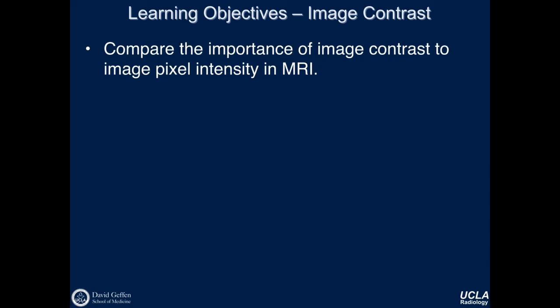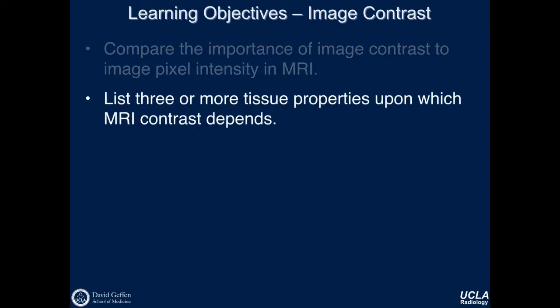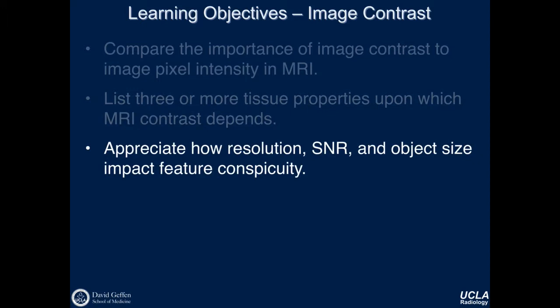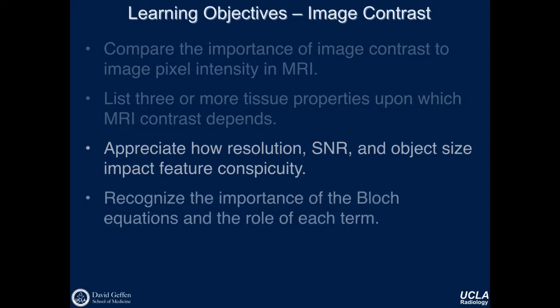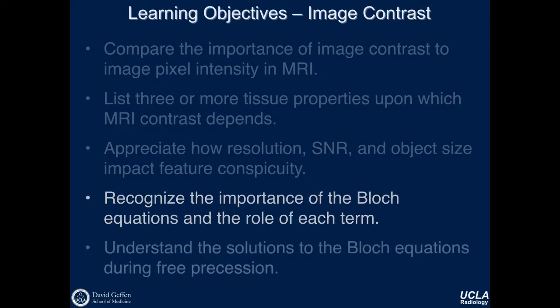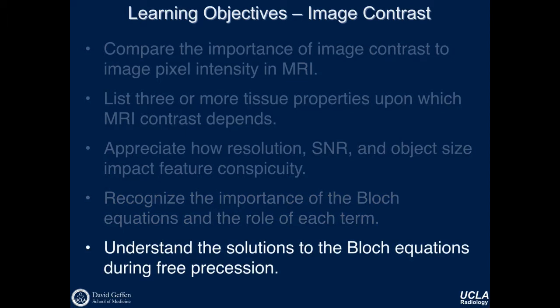At the end of this module, you should reach the following learning objectives: To be able to compare the importance of image contrast to image pixel intensity in MRI. To list three or more tissue properties upon which MRI contrast depends. To appreciate how resolution, SNR, and object size impact feature conspicuity. To recognize the importance of the Bloch equations and the role of each term. And to understand the solutions to the Bloch equations during free precession.